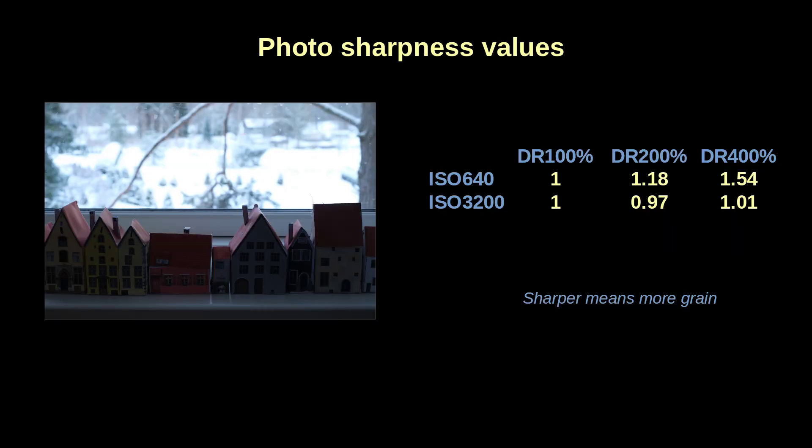Luckily we can again measure the sharpness numerically. The results exactly confirm what we observed before. At normal ISO values, the higher dynamic range settings affect the noise measurably. But at high ISO values this is not so, because the situation is already quite bad and the additional noise comes in not as grain but as mud — or as a general loss of detail.